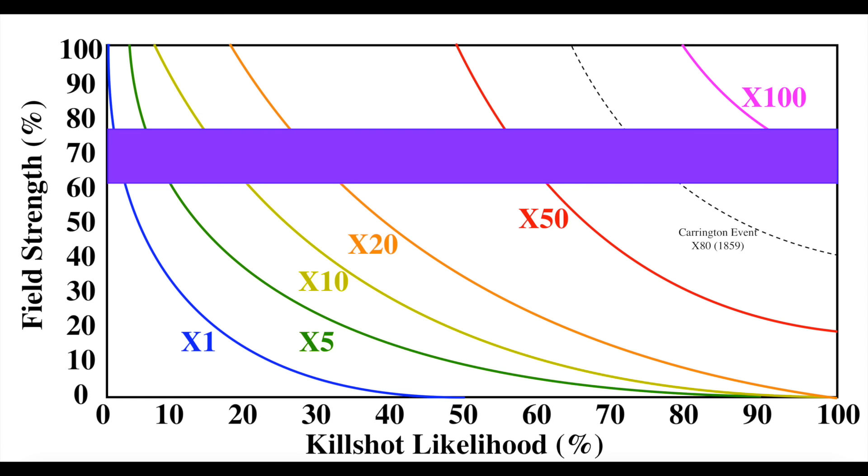So, I guess to answer the original question, we are due for one of those once-in-a-century super flares, maybe overdue, and we wouldn't really even need to have it to have the same effect, because Earth's magnetic field is weakening. As the magnetic excursion progresses, eventually, big super flare or not, the Sun is going to cook the grids.